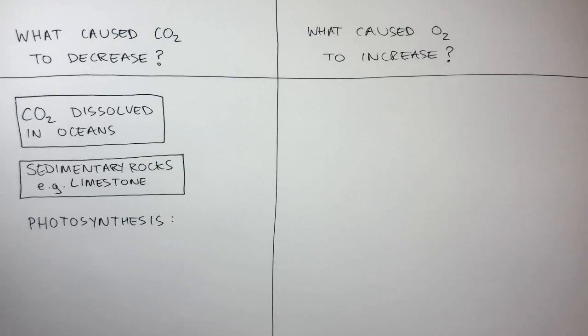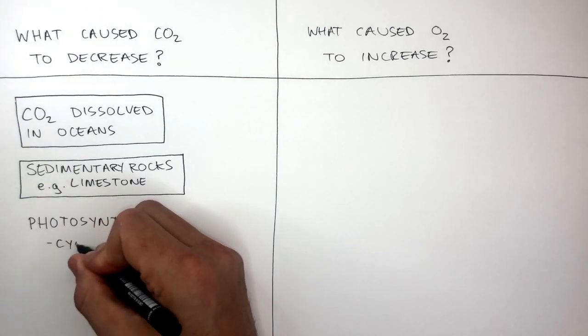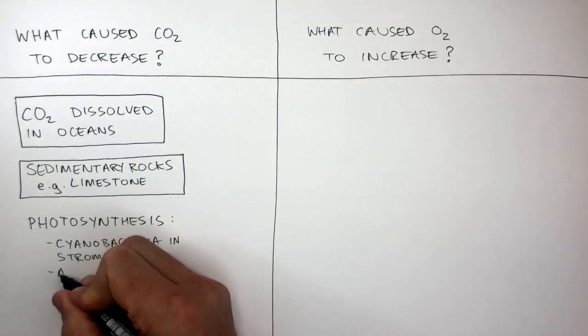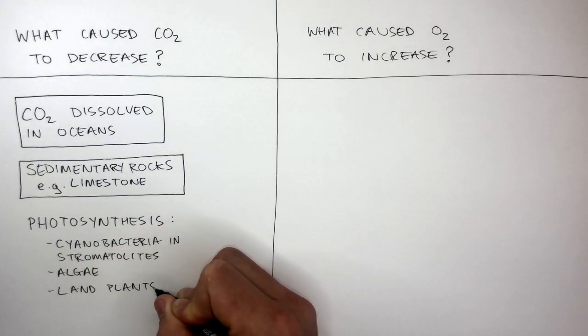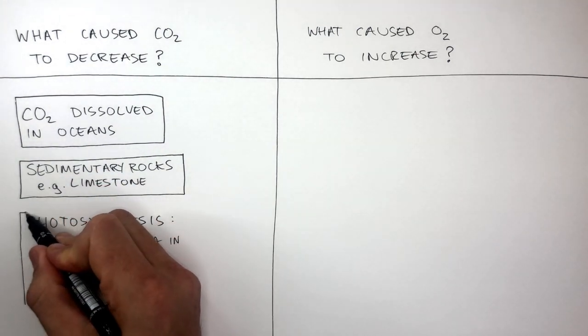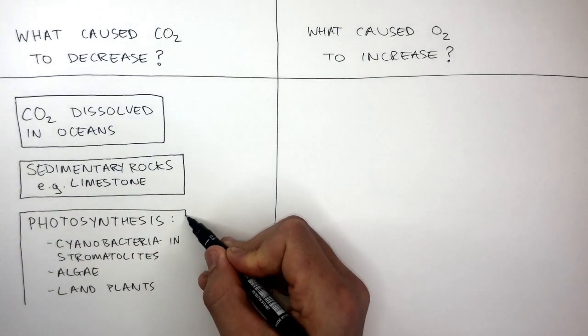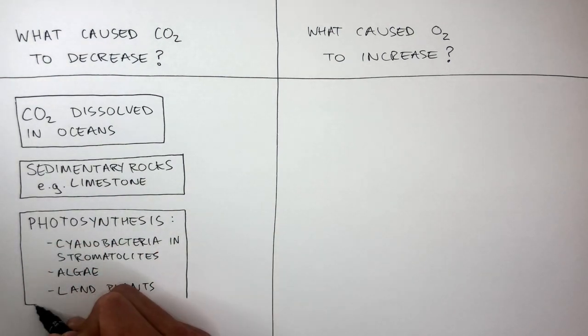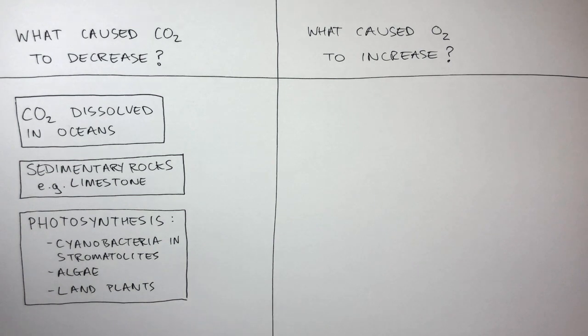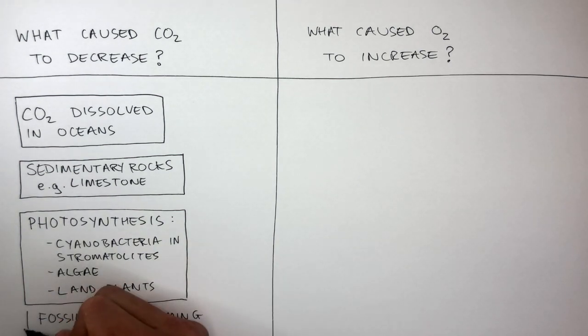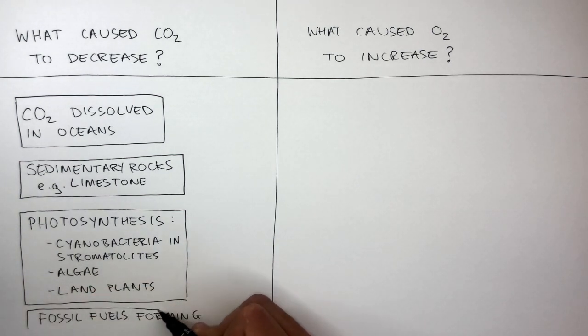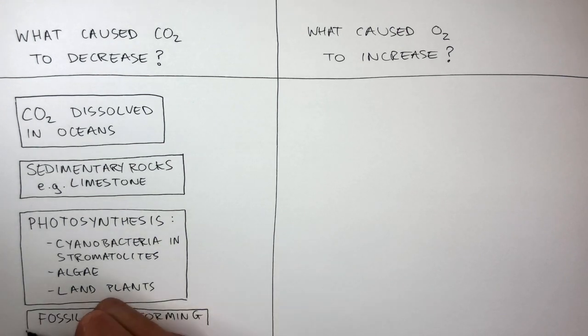Photosynthesis was a massive factor in reducing the carbon dioxide levels in the Earth's atmosphere. Cyanobacteria and stromatolites, algae, and land plants were all responsible for reacting carbon dioxide with water to produce glucose and oxygen. Fossil fuels forming stored the carbon within the fossil fuels, not allowing the carbon to be in Earth's atmosphere.